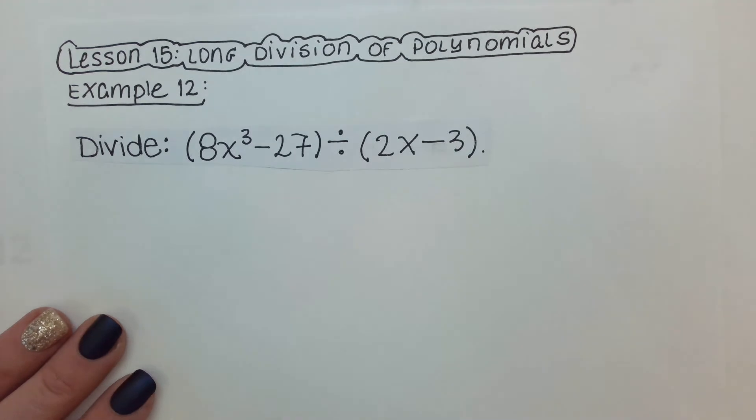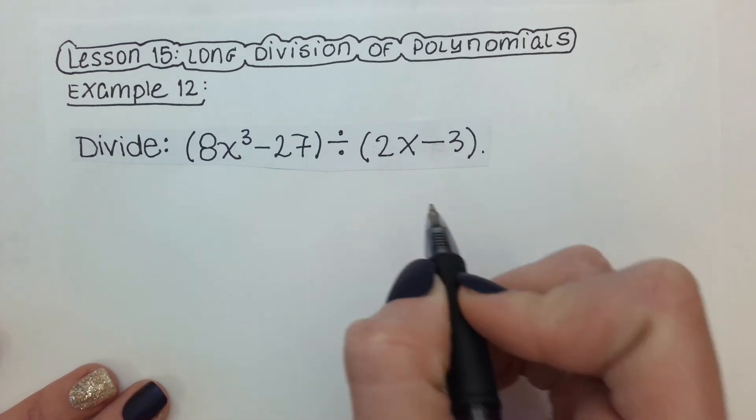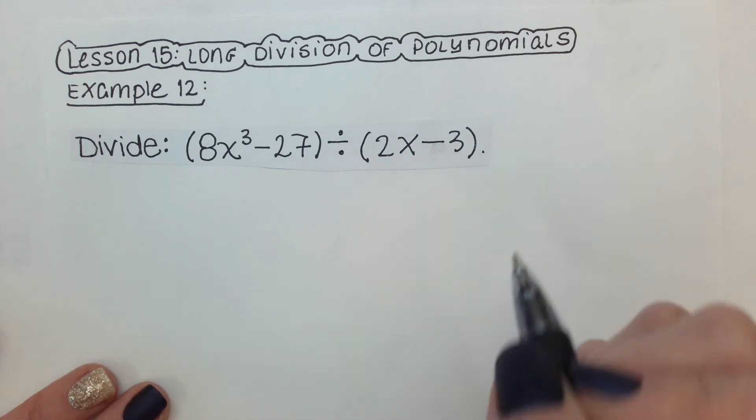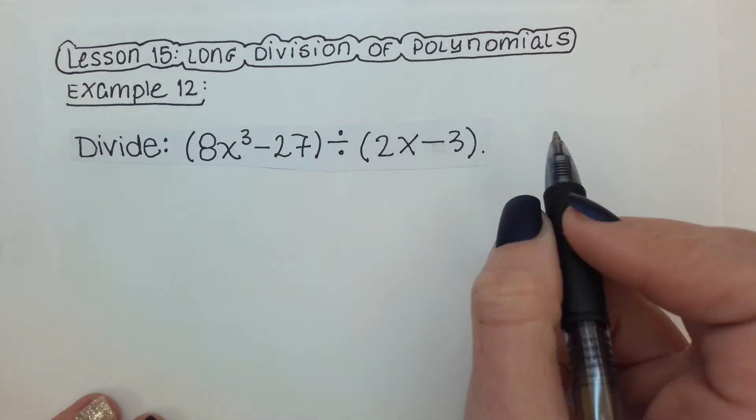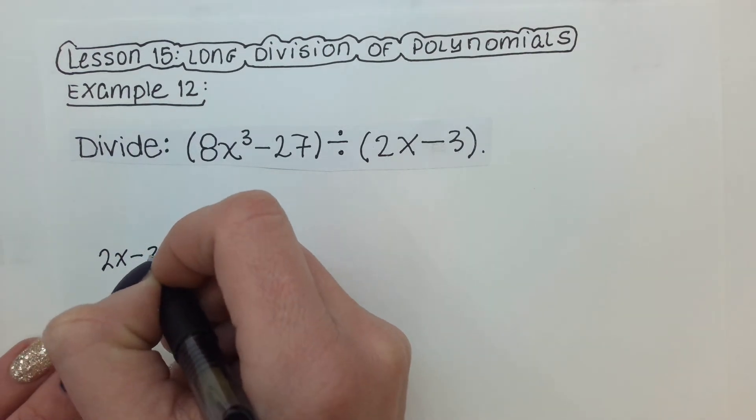Here we have example 12, and this one does have a few little sneaky tricks to it. But let's just approach this in a classic long division way using our placeholders, and then we'll chat about it later.